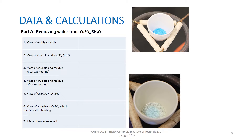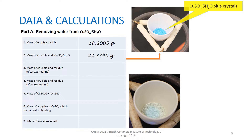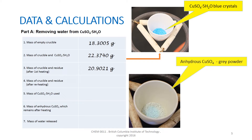Let's go through the data and calculations for part A, removing water from copper sulfate pentahydrate. Line 1 shows the mass of the empty crucible is 18.3005 grams. Line 2 shows the combined mass of the crucible and copper sulfate pentahydrate is 22.3740 grams. The copper sulfate pentahydrate starts as blue crystals; upon heating, the blue color fades and a gray powder residue remains. Line 3 shows the mass after the first heating is 20.9021 grams. A second heating is carried out to ensure all water is removed; line 4 shows the mass after reheating is 20.8993 grams.